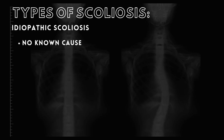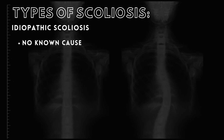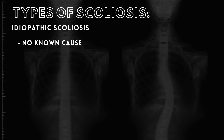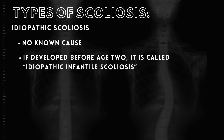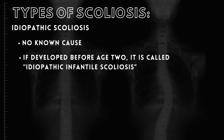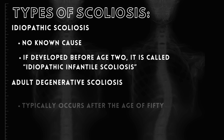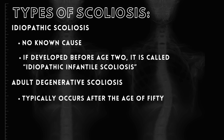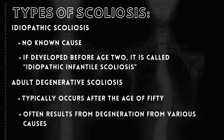Idiopathic scoliosis has no known cause. It typically begins in adolescence, but if it develops before age 2, it is referred to as idiopathic infantile scoliosis. Adult degenerative scoliosis typically occurs after the age of 50, and is often the result of disease, work-related conditions, surgery, trauma, or degeneration of vertebrae from other causes.